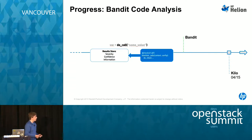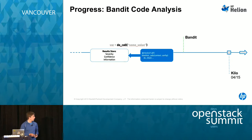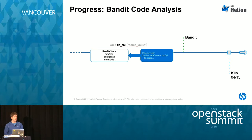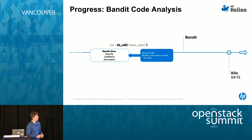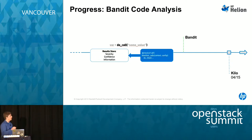Coming into the more recent work: Bandit is a Python security code linter. It allows us to do some really interesting things with regards to finding vulnerabilities in Python code. It is a nice small project and represents the state of the art in finding vulnerabilities in Python. We can put it in the gate — it detects a whole bunch of interesting stuff, and I'll talk more about that.